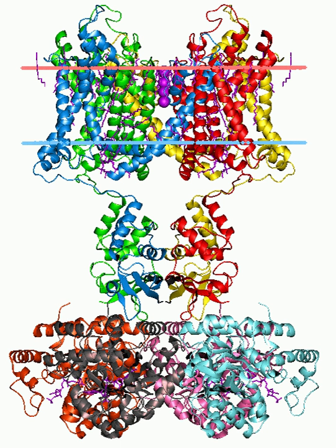Neurotransmitters are released from an axon terminal and bind to postsynaptic dendrites in the following procession: mobilization — recruitment of synaptic vesicles from the cytoskeleton; docking of the vesicle to the presynaptic membrane; priming of the vesicle by ATP; fusion of the primed vesicle with the presynaptic membrane and exocytosis of the housed neurotransmitter; uptake of neurotransmitters by receptors of a postsynaptic cell; and initiation or inhibition of an action potential in the postsynaptic cell, depending on whether the neurotransmitters are excitatory or inhibitory.